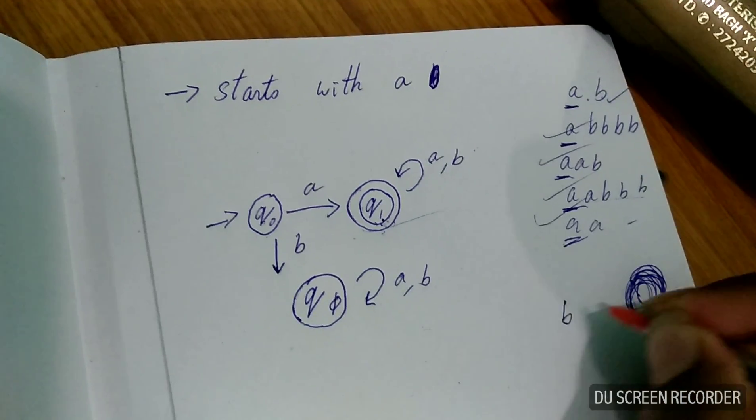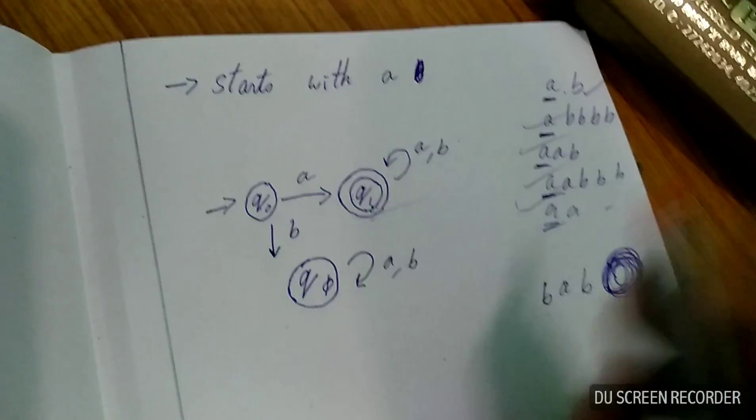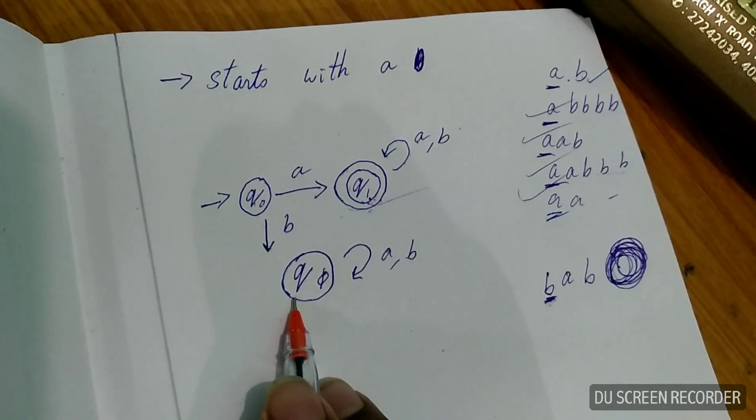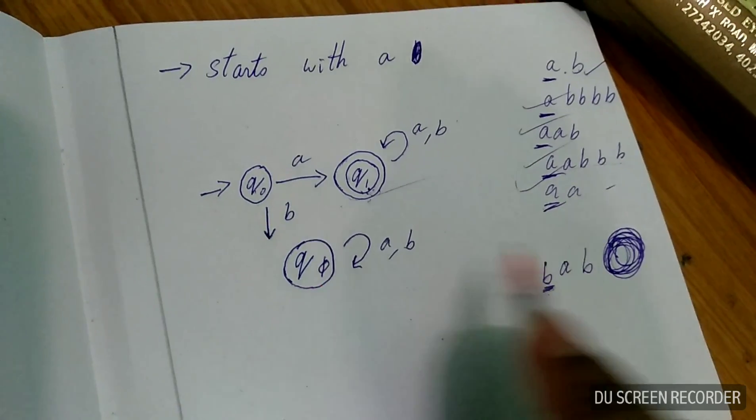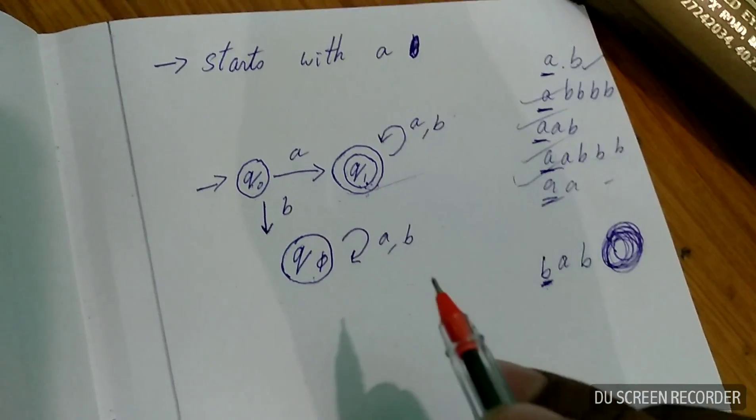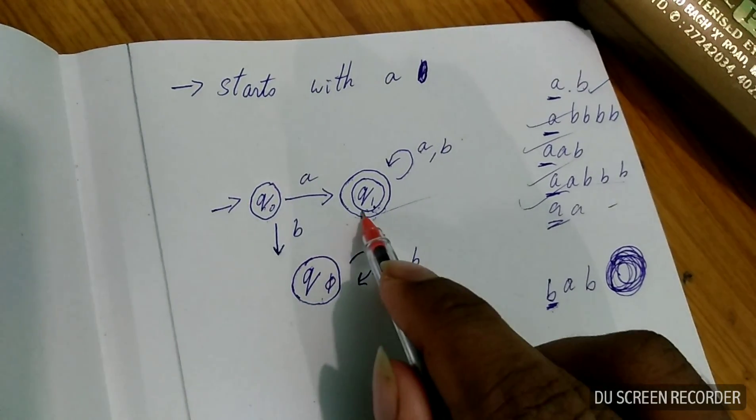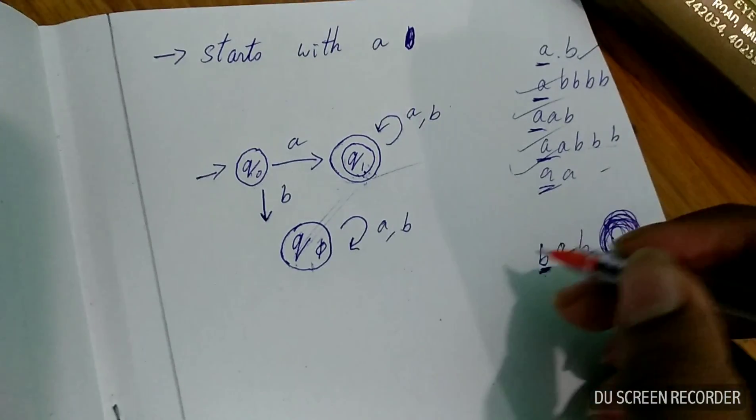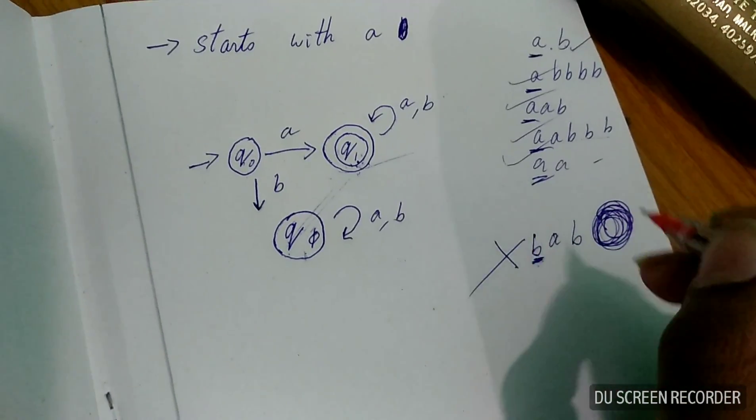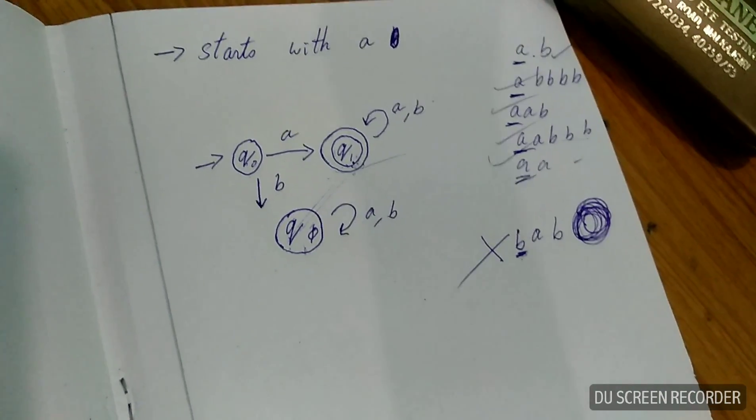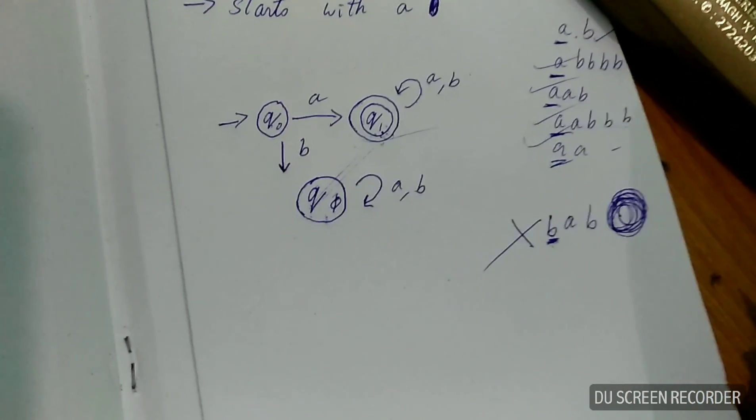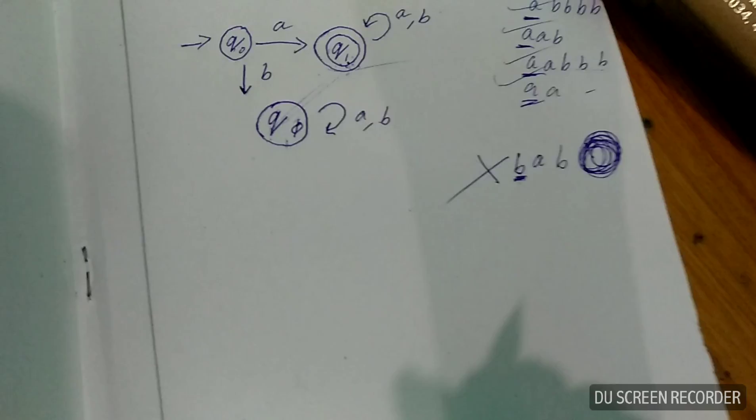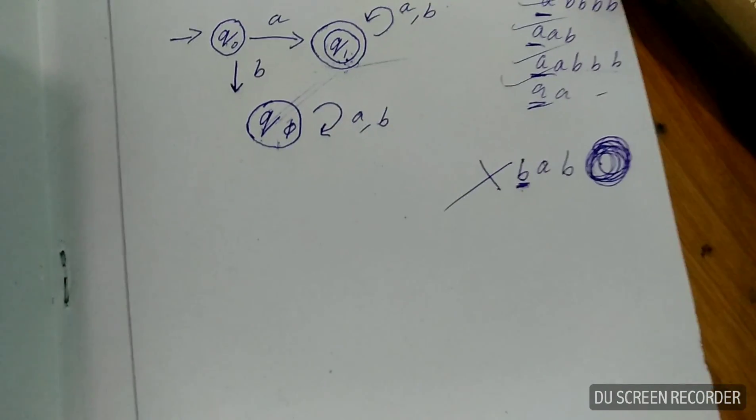But if you write here B, A, B, actually here we got first string as B, which means it will go to the dead state Q5. And A, same state. It will remain. B, same state. But unfortunately, it is not going to the final state. There is no link between Q5 to Q1. That's why the string has been rejected. The string cannot be worked because it's in the dead state. The string is wrong. It must start with A only.